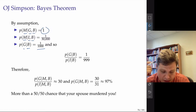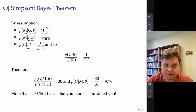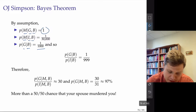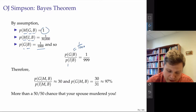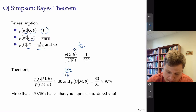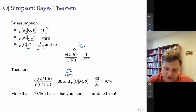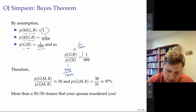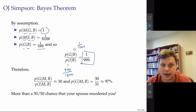We're going to calculate the posterior odds given that the person is a wife batterer. The probability of guilty given batterer is 1 divided by 1,000, and the probability of innocent given batterer is 999 divided by 1,000. If you calculate it out, you have 1 divided by 199. So given that the person is a batterer, the odds are 1 to 199 that he kills his wife.